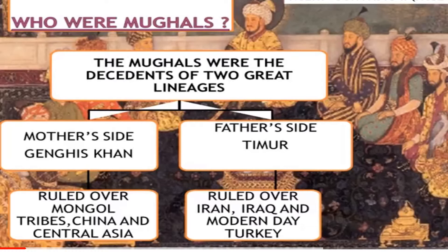From their father's side they were the descendants of Timur. Timur ruled over Iran, Iraq, and modern-day Turkey.